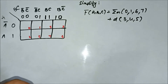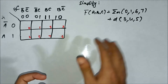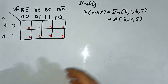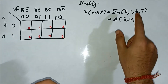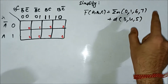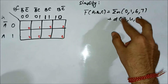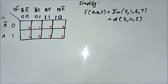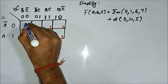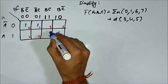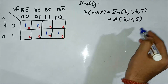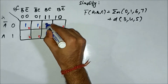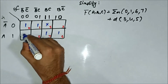This is the third question related to SOP KMAP with don't-care conditions. We have the Boolean expression given in terms of the sum of minterms and the don't-care values. Minterms 0, 1, 6, and 7 will be marked as 1. Cells 3, 4, and 5 will be marked as X because they are under the don't-care bracket.